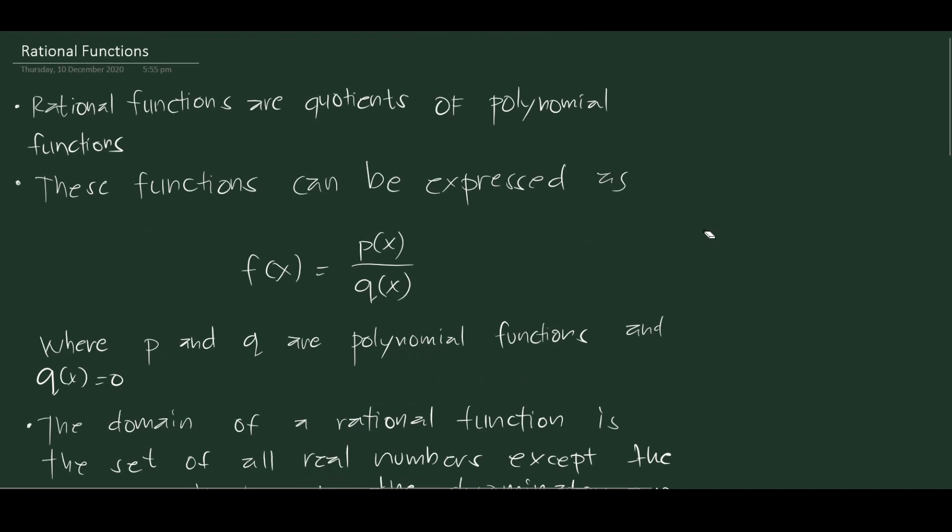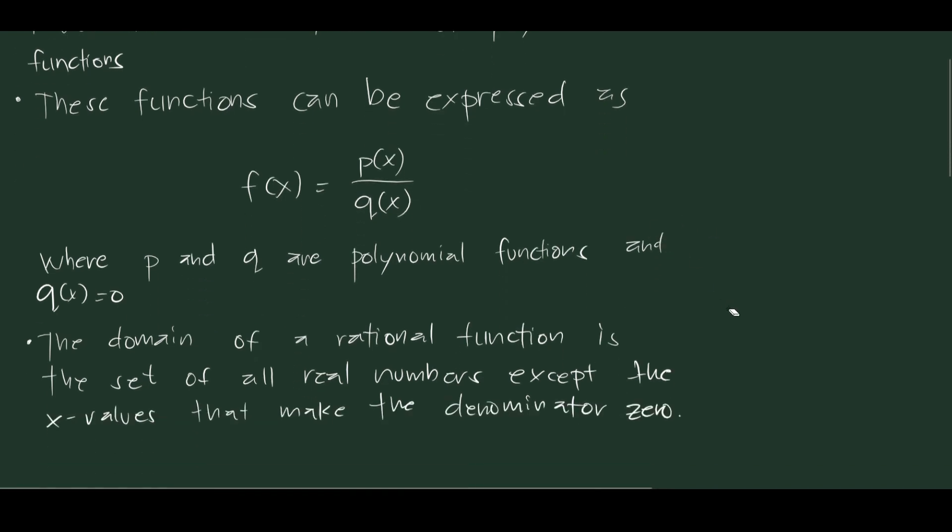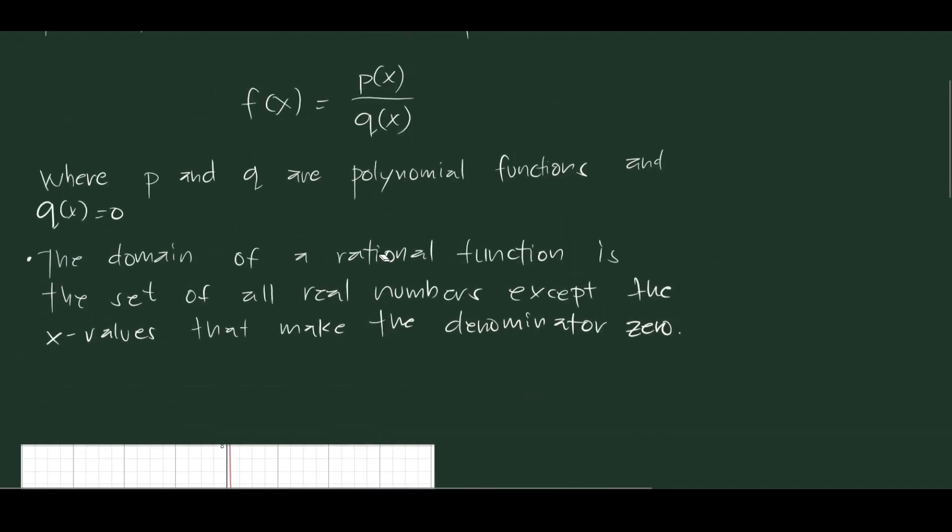Let's start with the definition. Rational functions are quotients of polynomial functions. These functions can be expressed as f(x) = p(x) / q(x), where p and q are polynomial functions and q(x) ≠ 0. Because if q(x) equals 0, that would be undefined.